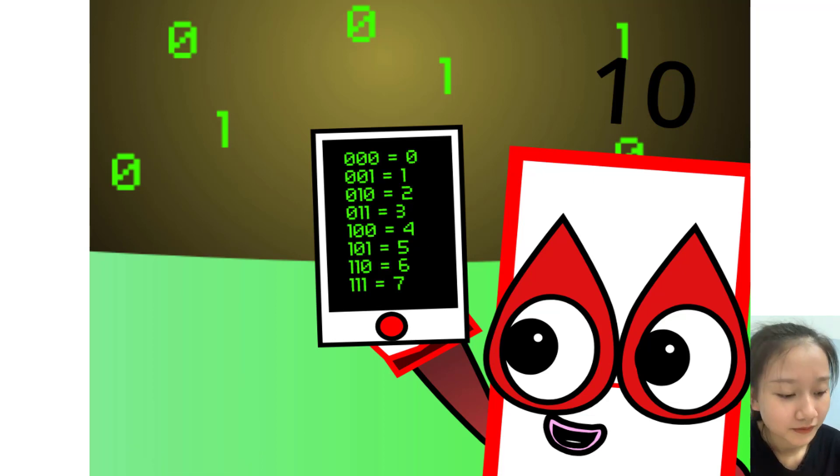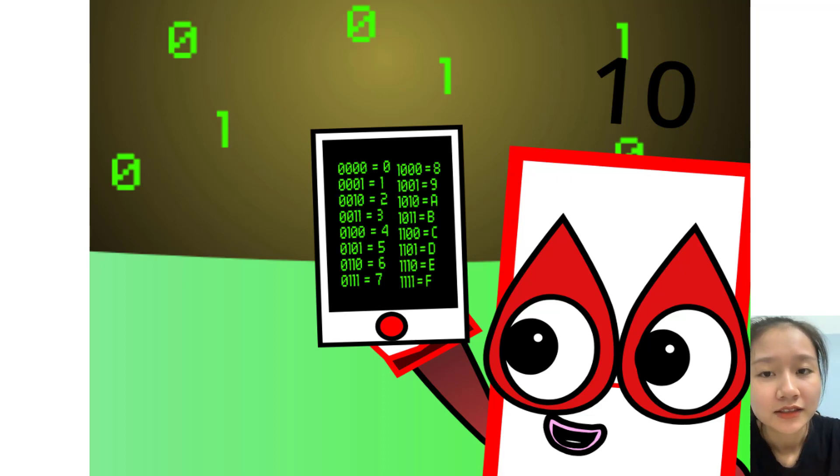There are 8 different combinations of 3 digit numbers in binary. This means that binary can easily be coded into octal. There are also 16 different combinations of 4 digit numbers in binary. This means that binary can easily be coded into hexadecimal too.